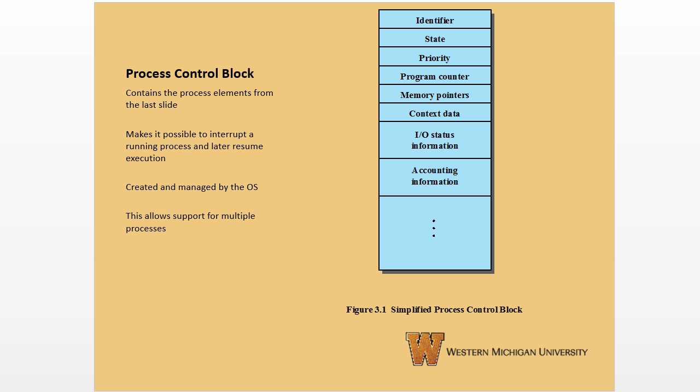This process control block contains the elements from the last slide, and this is what makes it possible to interrupt a running process and later resume execution of that process as though it never stopped. These process control blocks are created and managed by the operating system, and this is what allows support for multiple processes. The way we can share a single processor amongst multiple processes is if we can pause the execution of a process, save the state, and then start it back up again as though it never stopped. That's all for this video. In the next video we'll take a look at Chapter 3, Section 2 on process states.